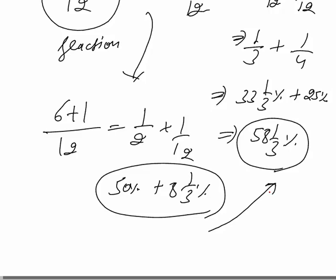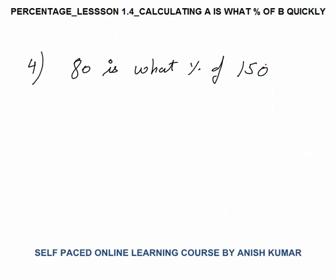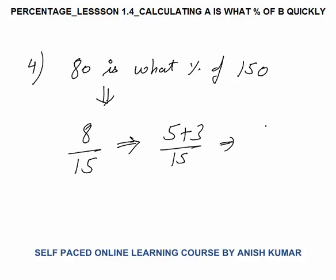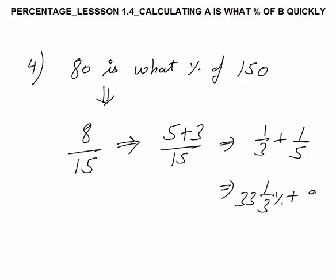Question 4: 80 is what percent of 150? Pause the video, try to solve yourself, then look at my solution. The fraction is 8 by 15. To convert this: write 5 plus 3 by 15, so 5 by 15 is 1 by 3 and 3 by 15 is 1 by 5. I know 1 by 3 is 33⅓ percent and 1 by 5 is 20 percent, so the answer is 53⅓ percent.